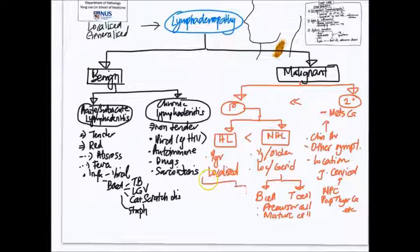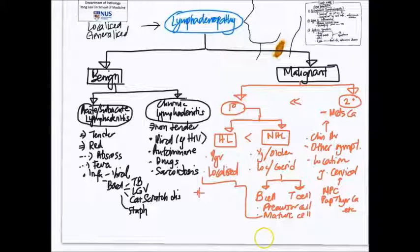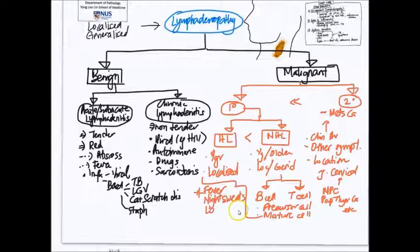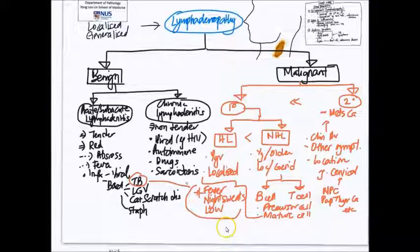How else do lymphomas present in addition to lymphadenopathy? Well, they can also have some systemic symptoms such as fever, night sweats, as well as loss of weight. It's important to remember that these symptoms, sometimes known as B symptoms, not only can be caused by lymphoma but they can also be seen in tuberculosis. So both of these can result in systemic symptoms.